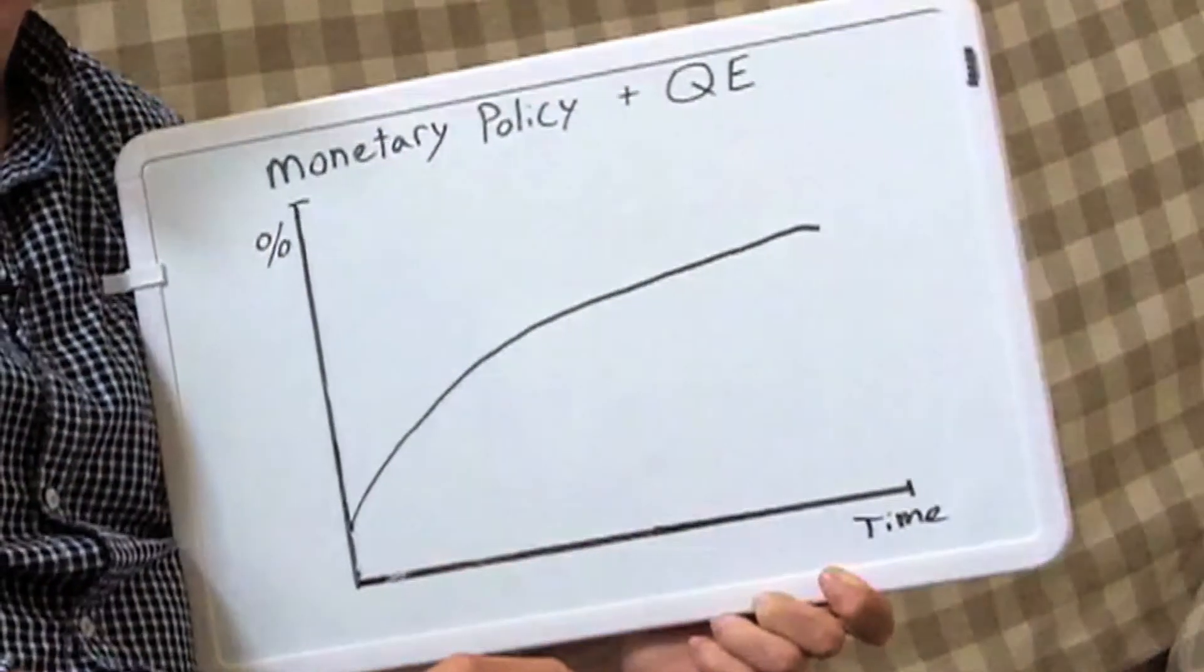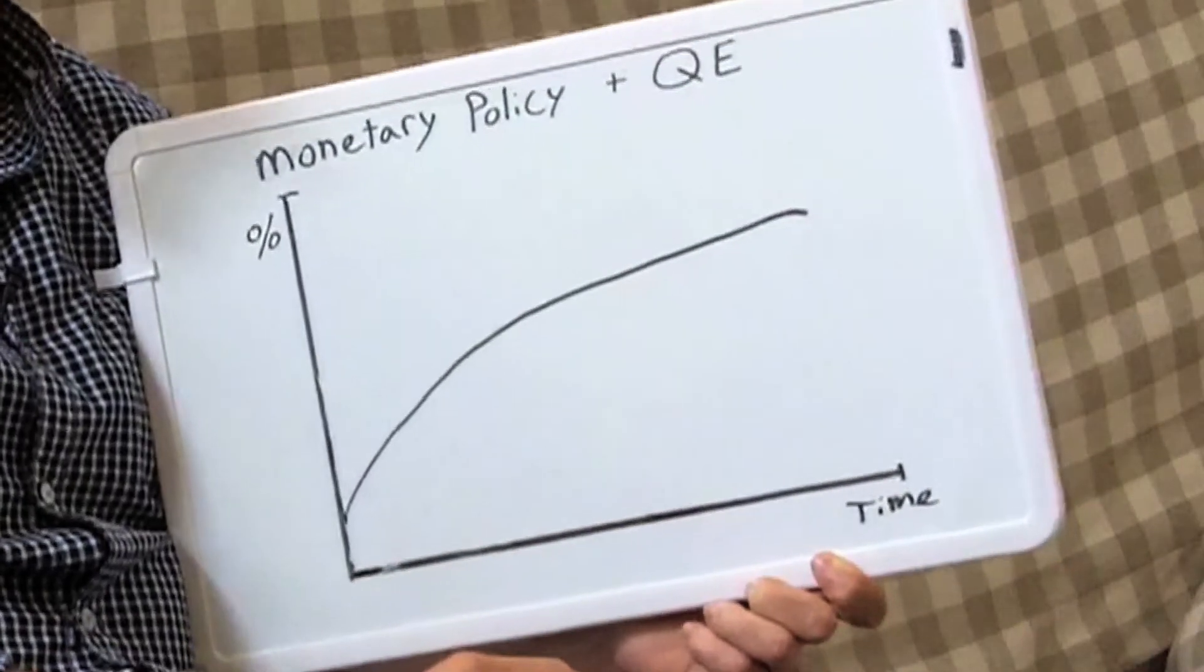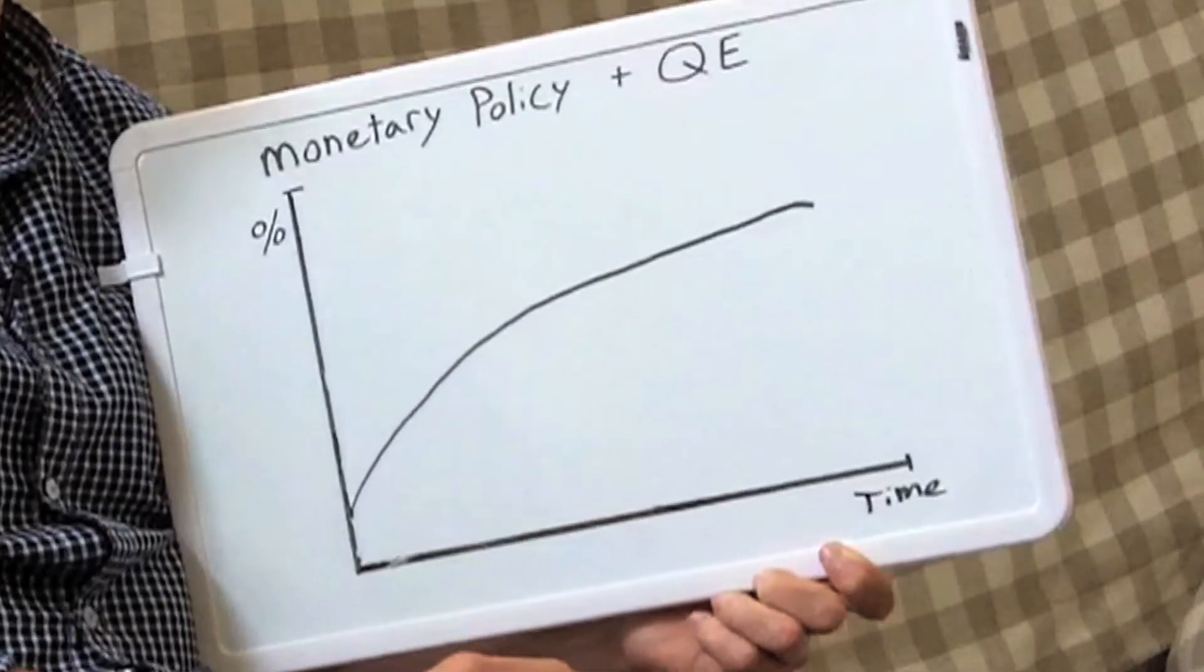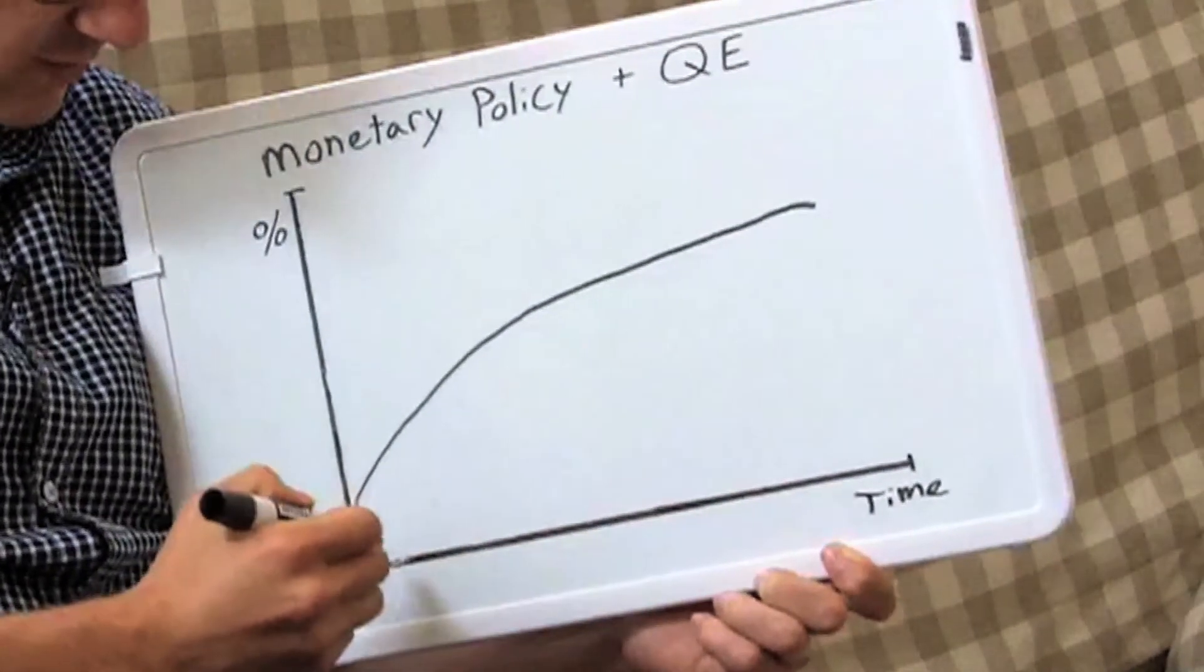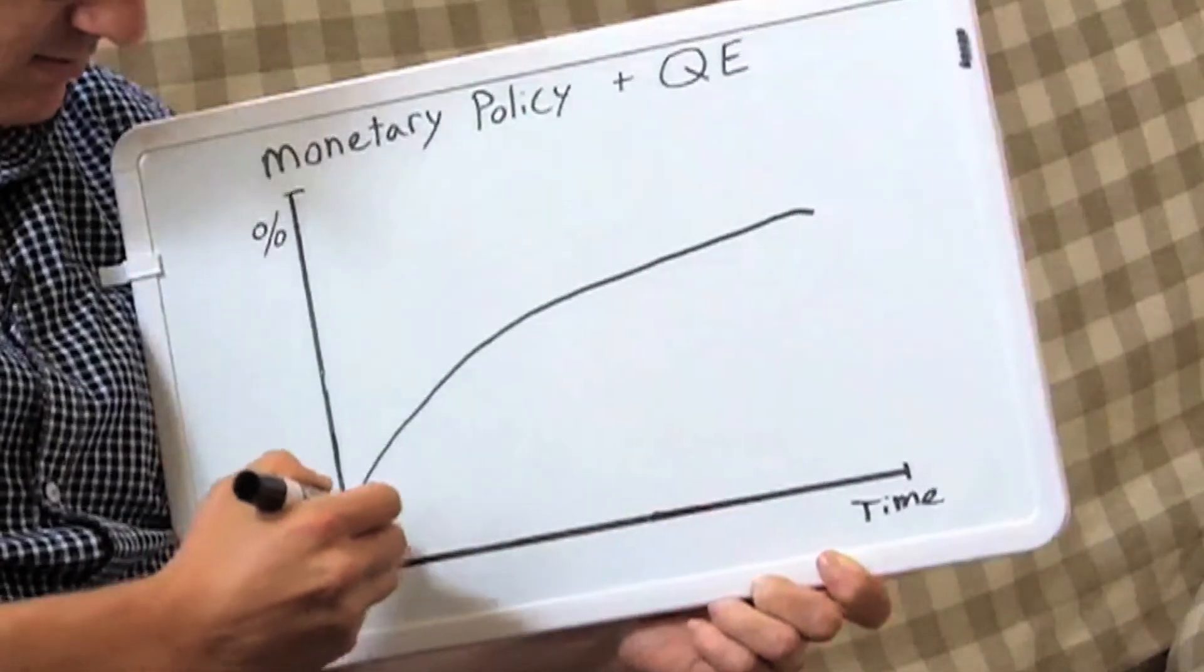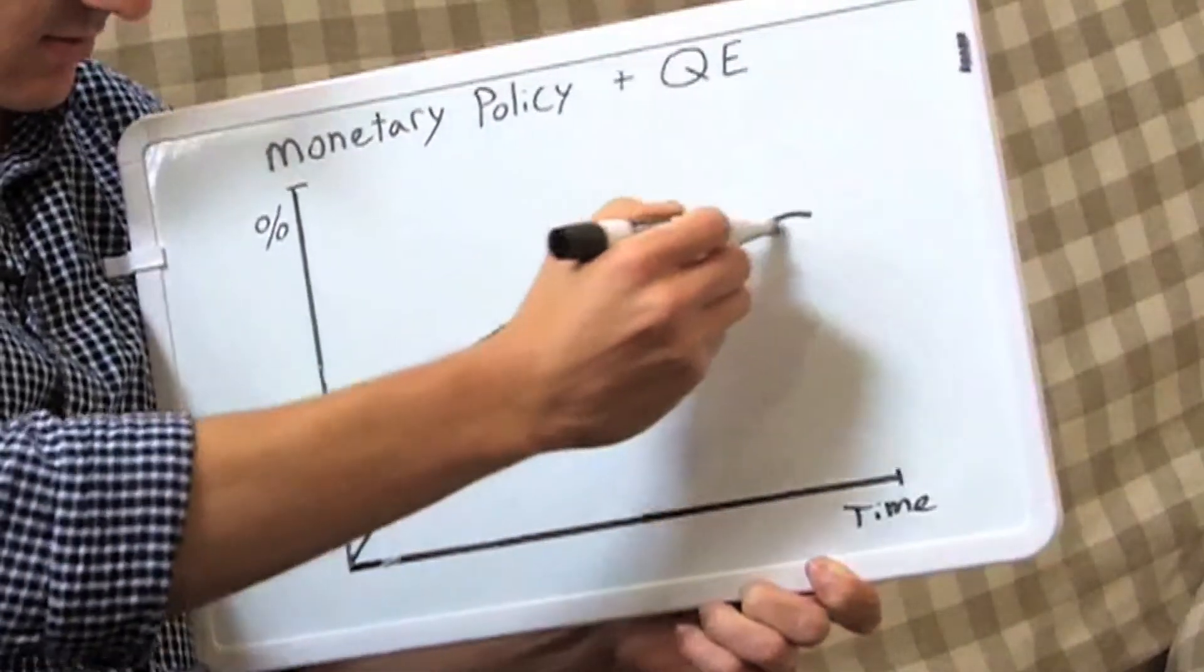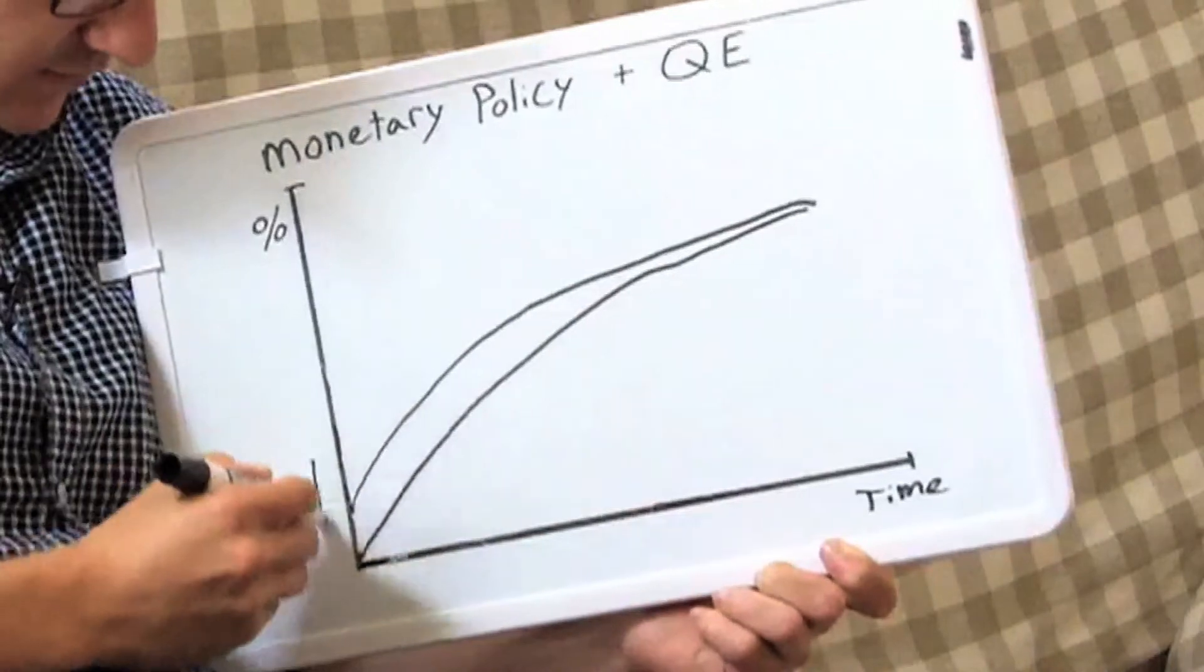When the Fed wants to stimulate the economy, it buys bonds, which causes short-term interest rates to go down, which might cause a yield curve to look something like this.